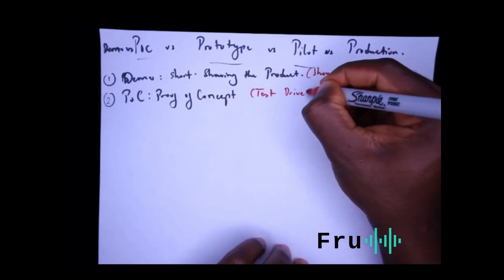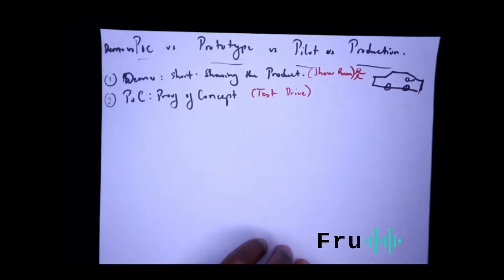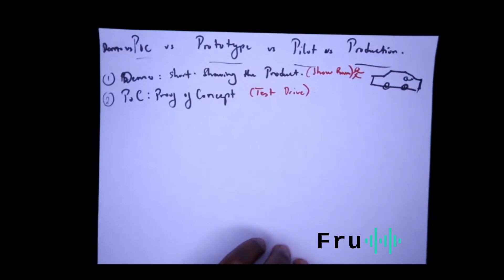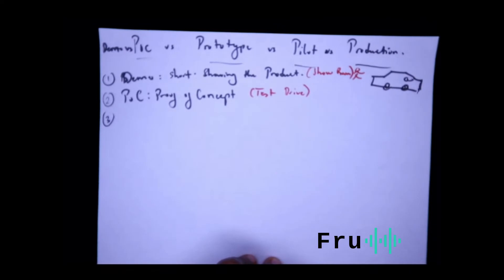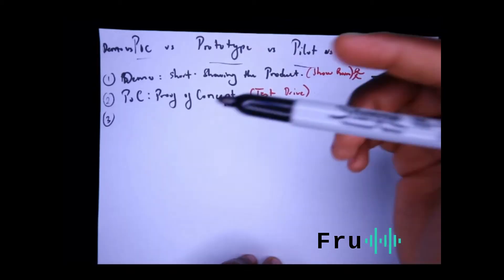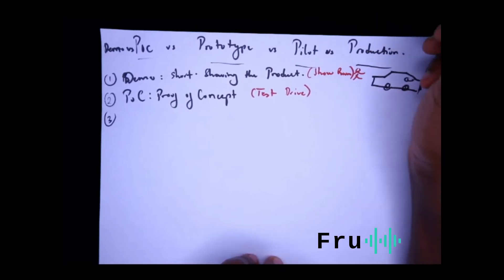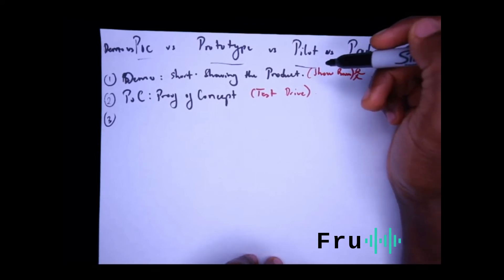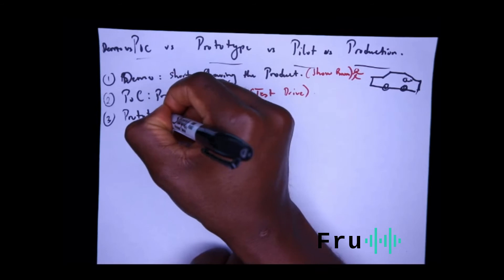That's basically what the POC — the proof of concept — would be. You're proving that not only am I just seeing this car, but I can actually test drive it and it feels like this is a car that works for me. After the POC, if you still really like it, you might say, 'Let's take this a little bit further,' into the prototype.